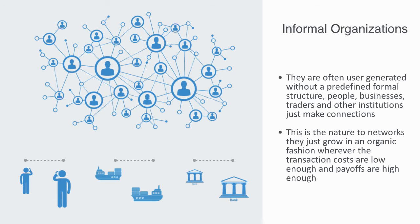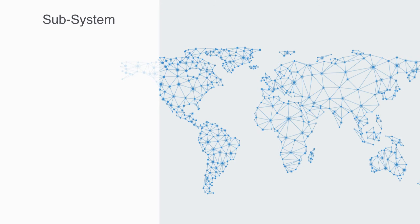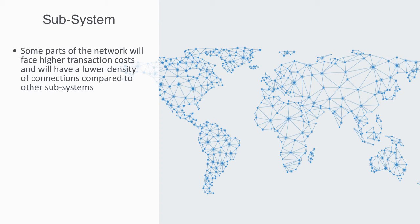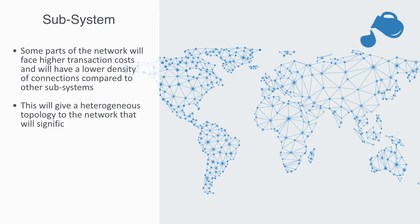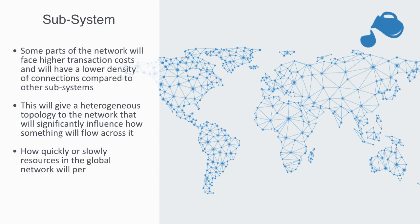No one planned or designed or even really manages the networks that run our global economy on its many different levels. The density of connections within a network are rarely evenly distributed out. Whether we're talking about a social network or a transportation network, some parts of the network will face higher transaction costs and will have a lower density of connections compared to other subsystems within the network that have a higher density of connections. For example, the transportation network of Nepal has a low density due to the high cost of making transportation connections within the Himalayas, while other parts of the global logistic network like the Netherlands will be densely interconnected.